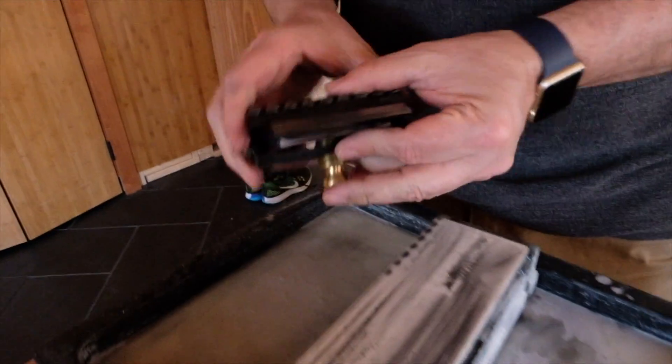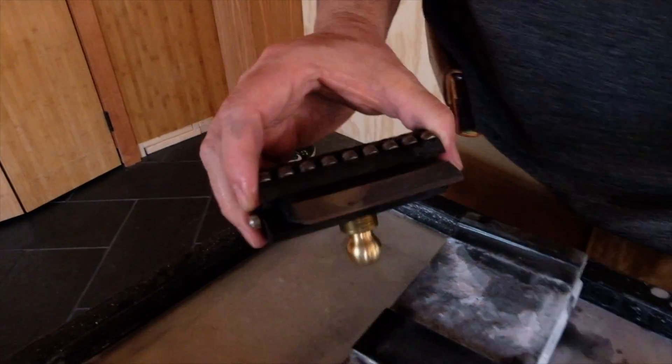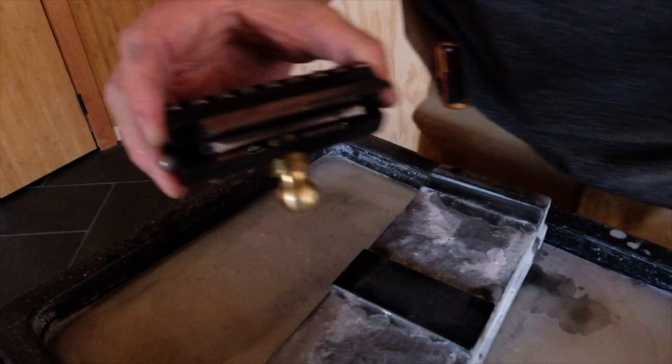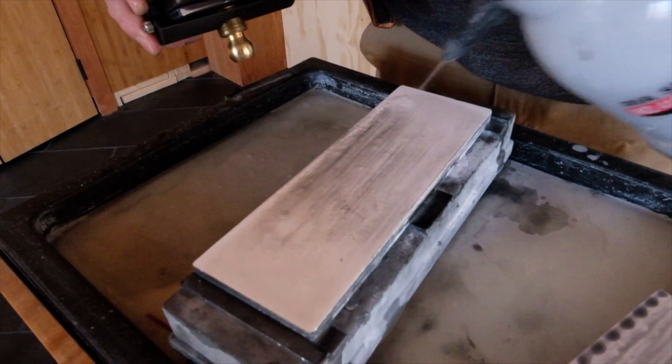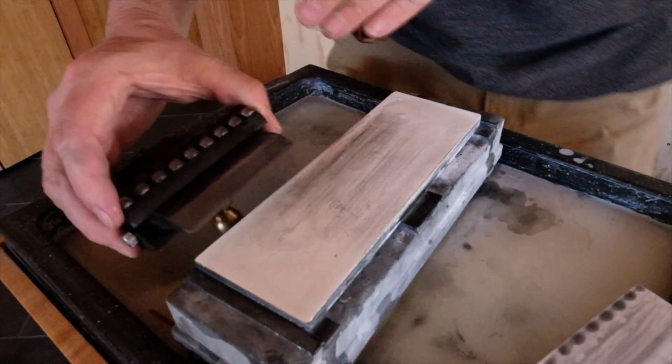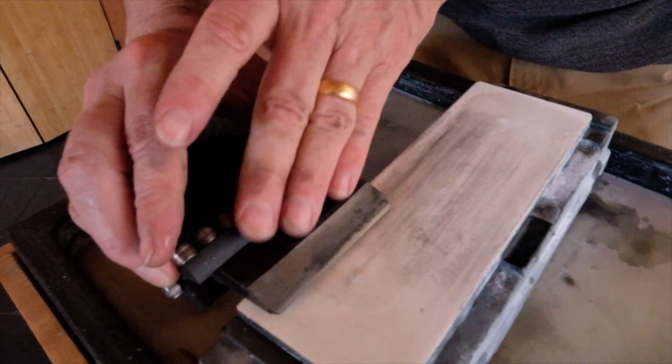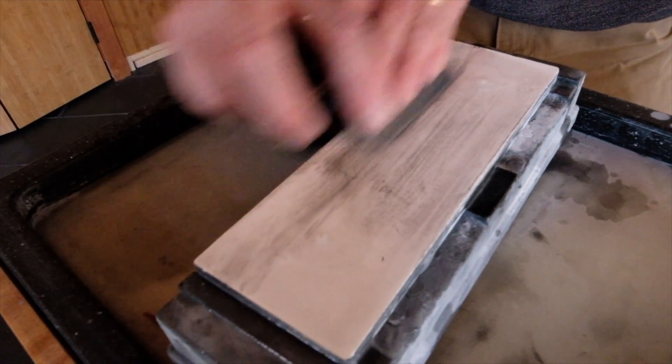And to cut the burr off, just put the fine polished stone up here. Put some water on it. And flip the plane over. And cut that burr off.